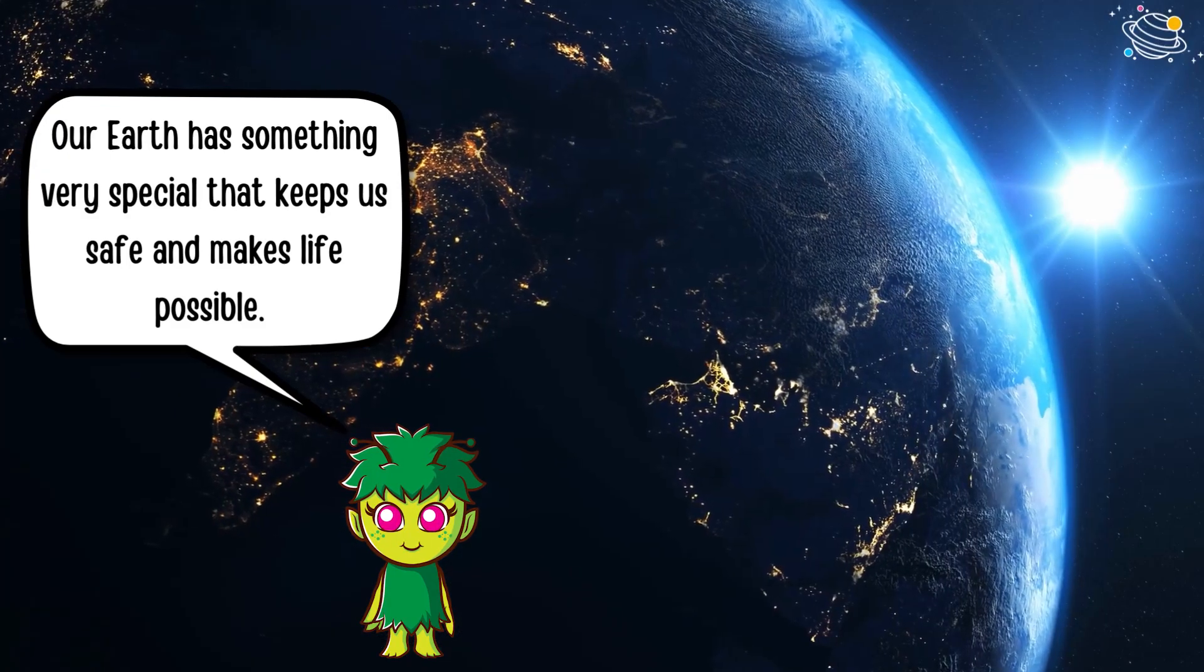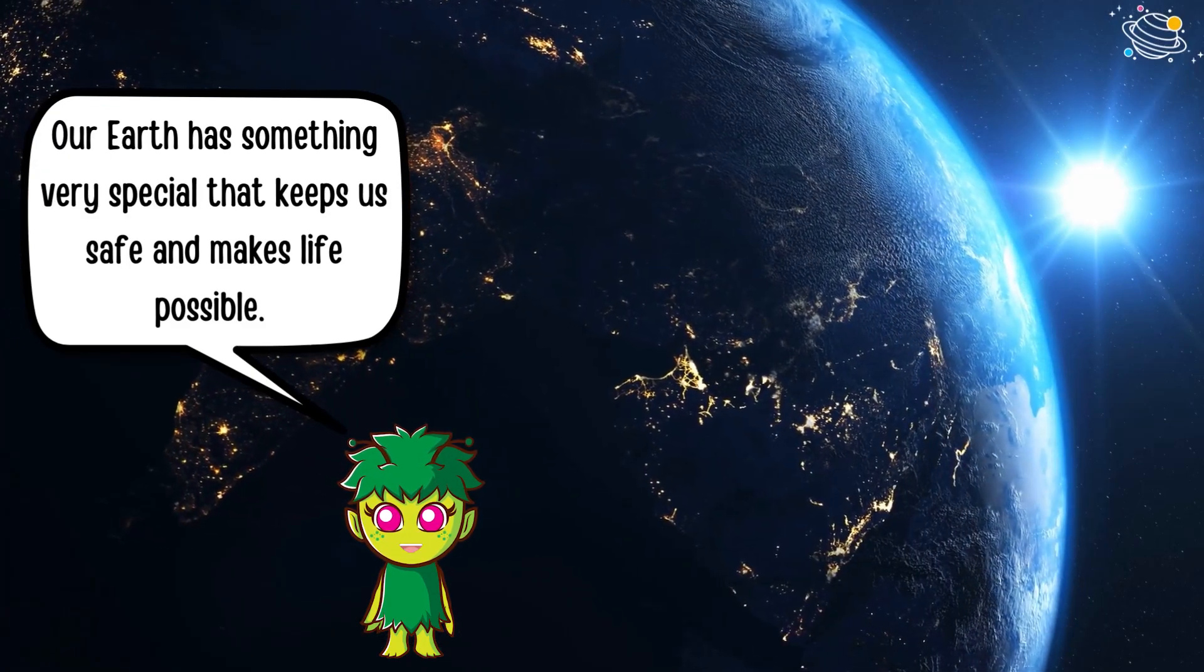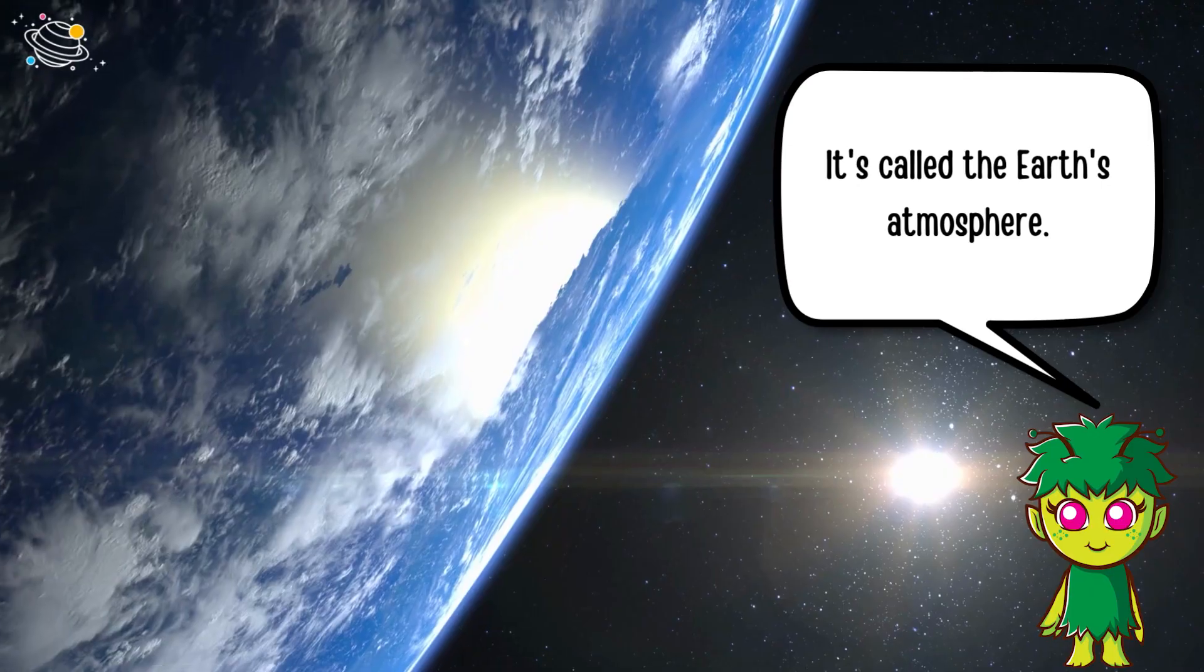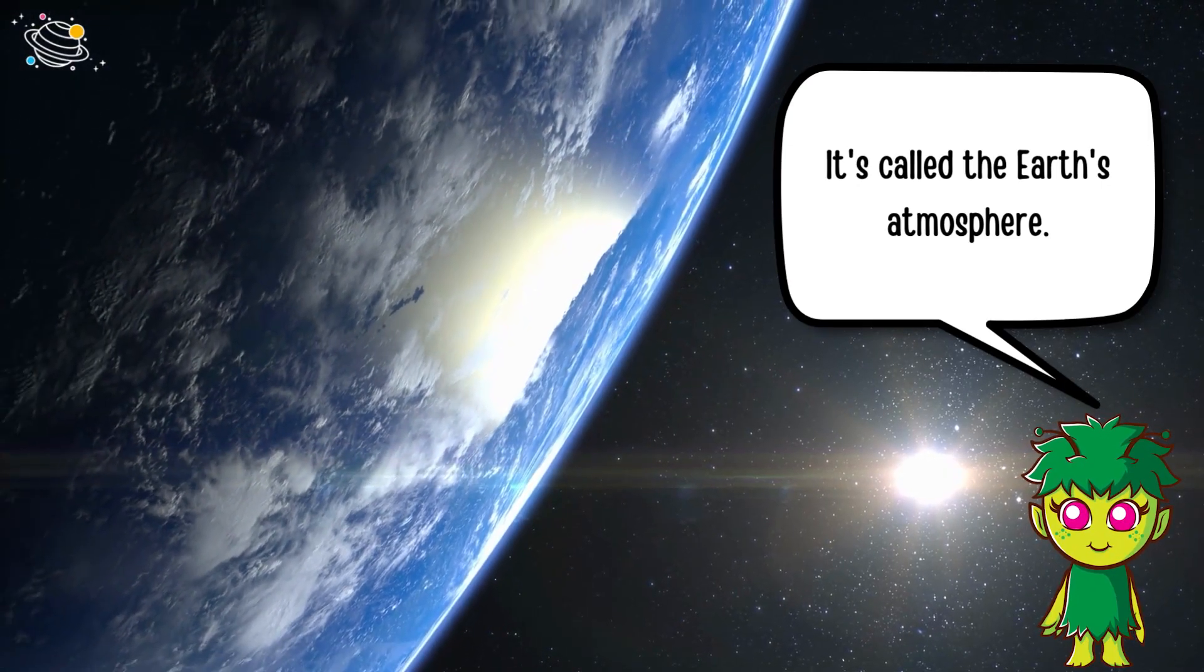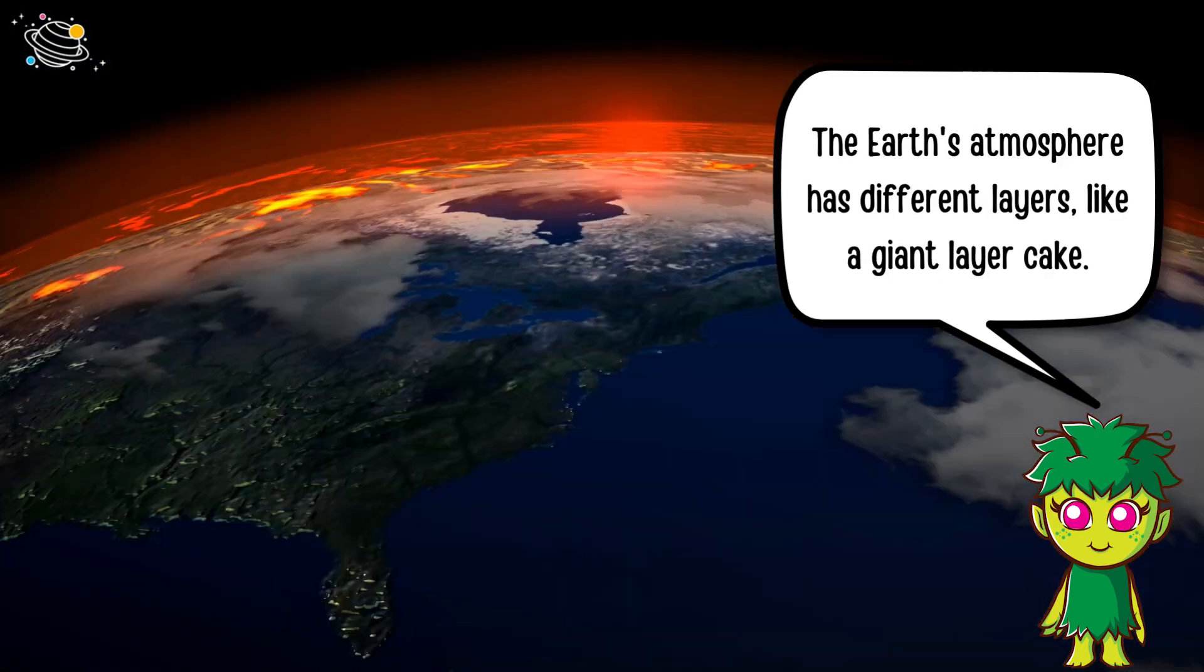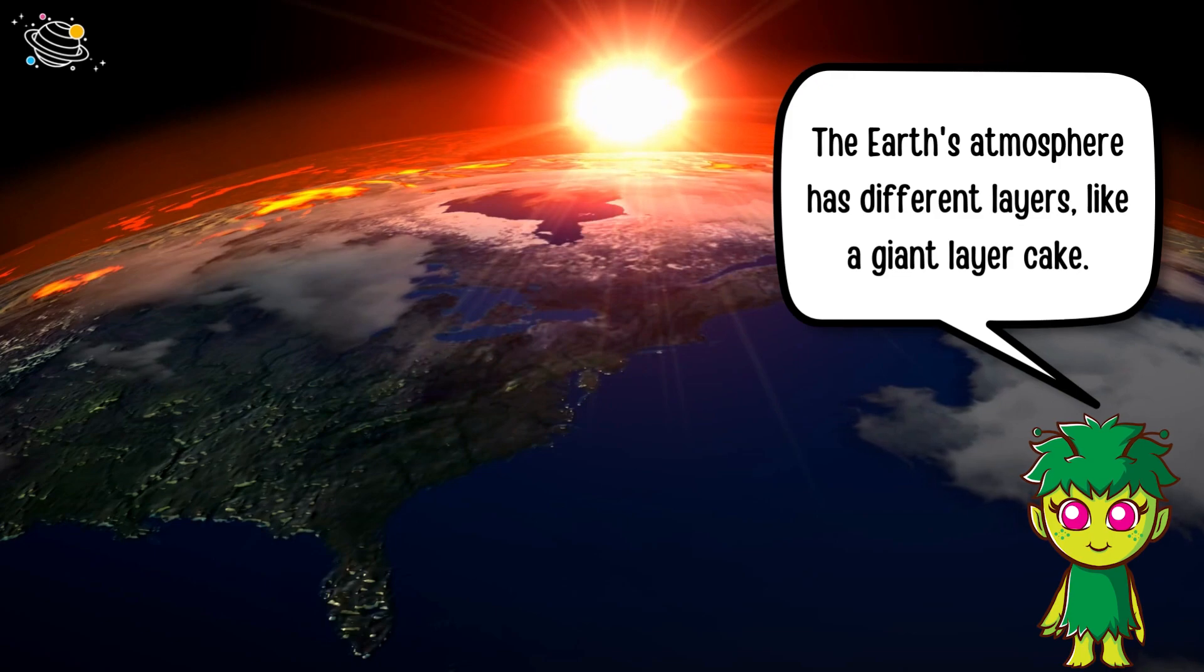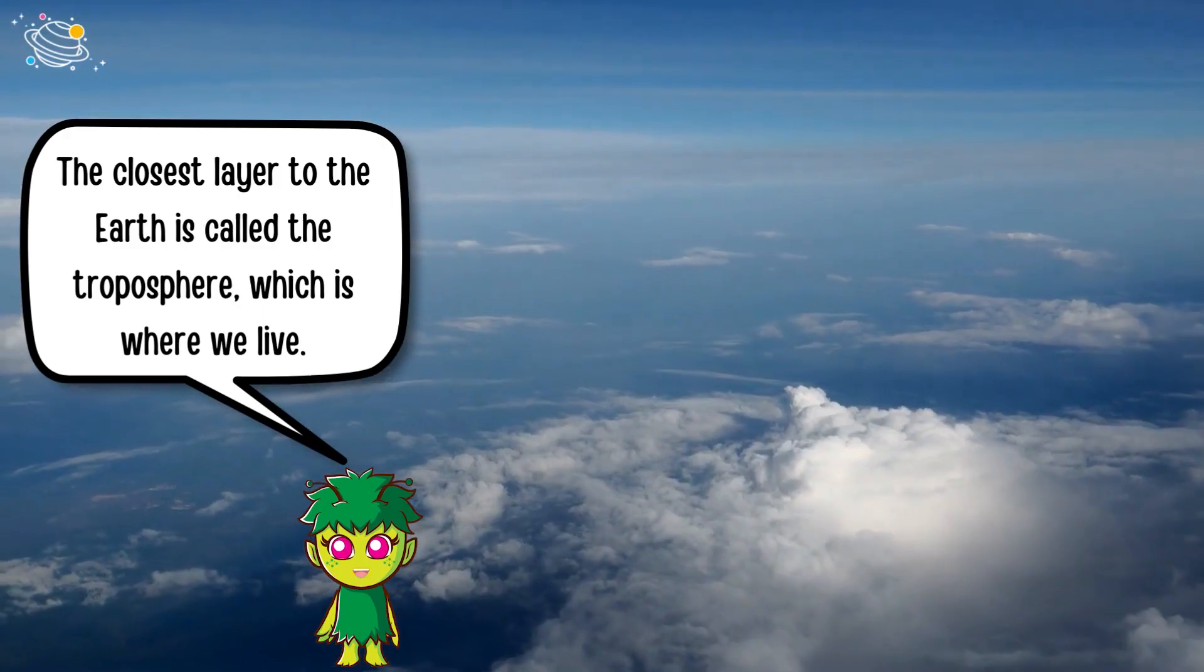Our earth has something very special that keeps us safe and makes life possible. It's called the earth's atmosphere. The earth's atmosphere has different layers like a giant layer cake. The closest layer to the earth is called the troposphere, which is where we live.